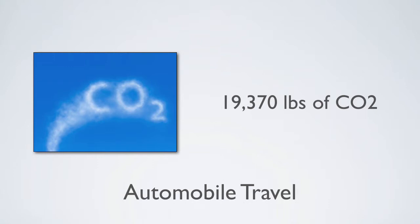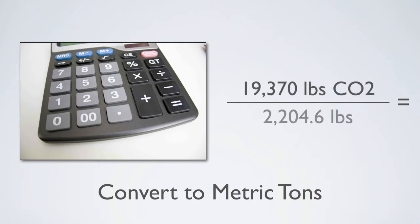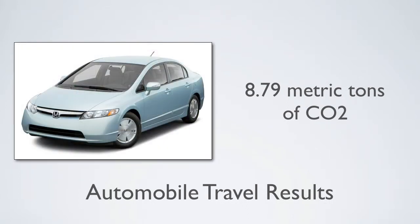The final step is converting this figure into metric tons of carbon dioxide. We know that a metric ton has 2,204.6 pounds, so all we need to do is divide the number of pounds by 2,204.6. 19,370 pounds divided by 2,204.6 equals 8.7 metric tons of CO2. So, the Honda Civic that traveled 30,000 miles over the course of a year resulted in 8.79 metric tons of CO2 emissions.